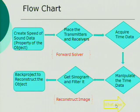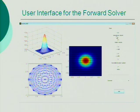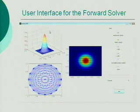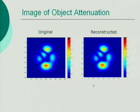I also made a user interface for the user to create the object. The user can specify different parameters like background velocity, transmitter-receiver numbers, and the shape of the object — in this case, a Gaussian distribution. This is the image of object attenuation. Instead of representing the object with speed of sound, you can also represent it with an attenuation factor. This shows my program works.